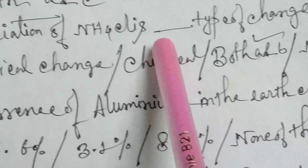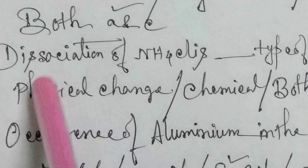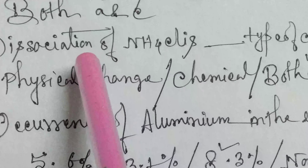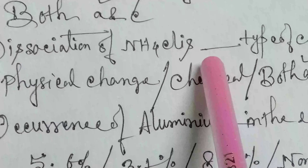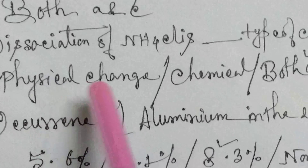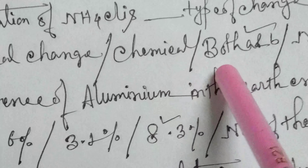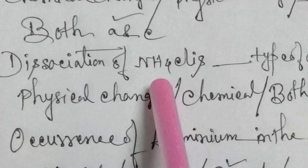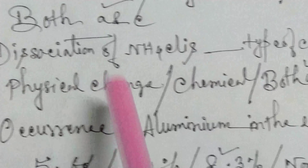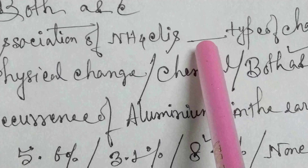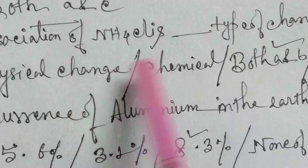Dissociation of ammonium chloride is which type of change? Physical change, chemical change, or both A and B. The answer is both A and B. Because sublimation of ammonium chloride is a physical change, and it also dissociates — breaking down into ammonia and chlorine — which makes it a chemical change as well. So the answer is both A and B.